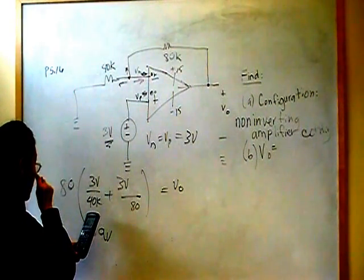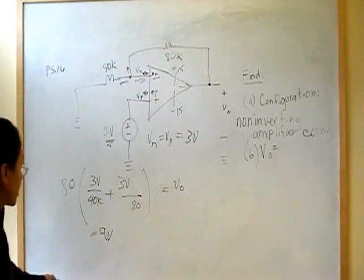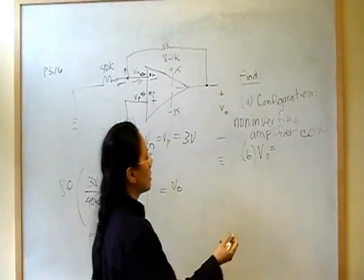Let me make sure that I got that right. Three over 40, three over 80, times 80. Yes. So, part B is nine volts.